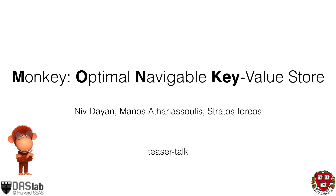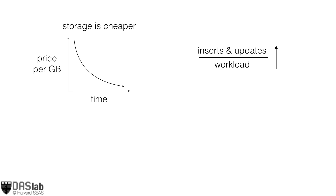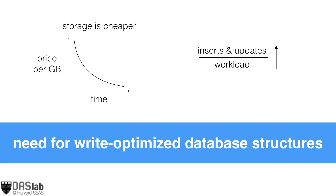Hello, and welcome to our teaser talk about the paper MONKEY, which stands for Optimal Navigable Key Value Store. Over the past few decades, the price of secondary storage has decreased at an exponential rate with respect to time, and this led to an increase in the proportion of insertions and updates in application workloads. Overall, these trends led to a need for more write-optimized database structures.